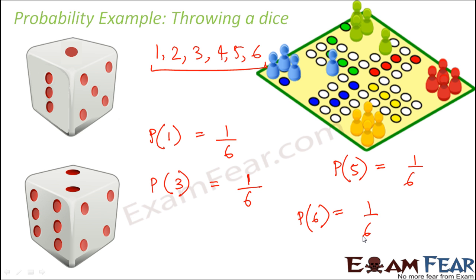Every time you throw the dice, it could be any of these numbers. Sometimes while playing Ludo, when you throw the dice simultaneously maybe 4 to 5 times, 2 times you got 2, 2 times you got 6, and then you got a 1. You can just get anything. But the probability of getting any of these numbers is equal, and each of their probability is 1 by 6.